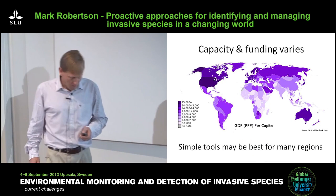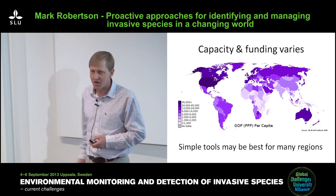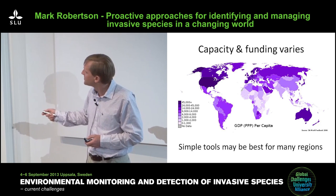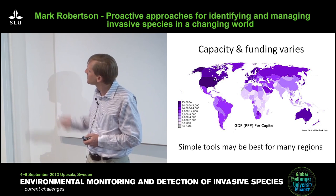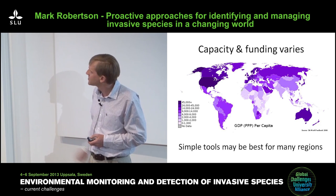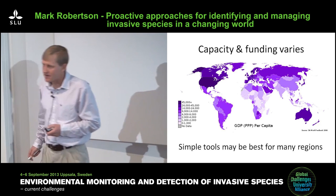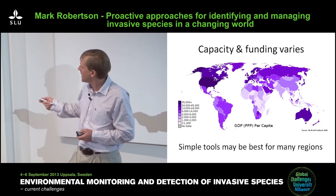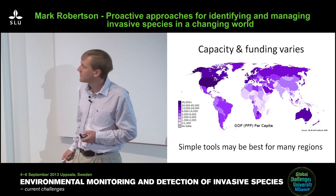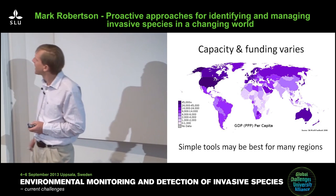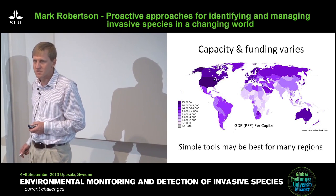An important point is that capacity and funding varies throughout the world. This map of GDP shows that darker countries have more resources while lighter countries have fewer. Often simple tools may be best for many regions. There are a lot of sophisticated tools out there, but they're not always appropriate in all circumstances.